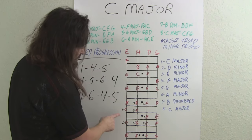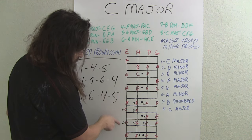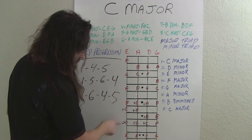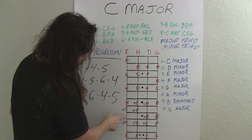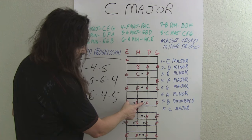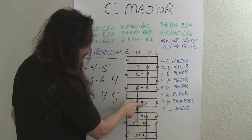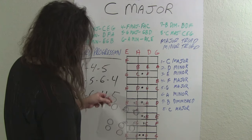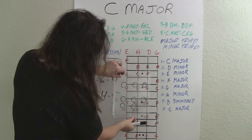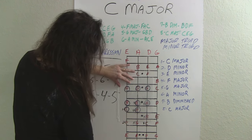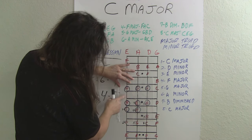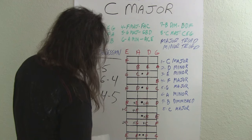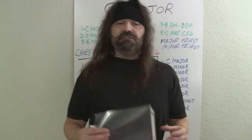Finding the relative minor of C major is easy — all we do is go to the sixth note. Here's your C major scale: C, D, E, F, G, A, B, C — numbered one through eight. We go to the sixth note: one, two, three, four, five, six — that's A. So the relative minor to C major is going to be A. Minor scales also have distinct patterns, and if I lay that pattern over the bass neck, everything is a natural note: A, B, C, D, E, F, G, A — no sharps or flats.